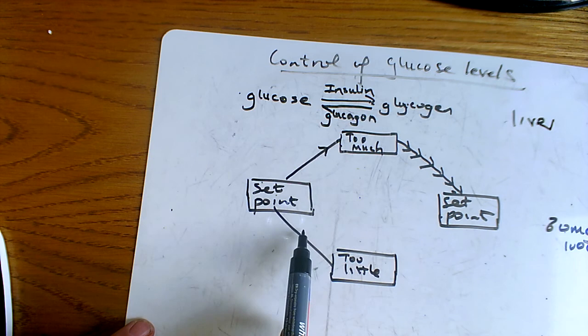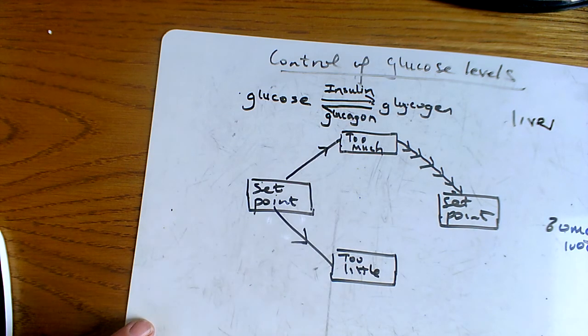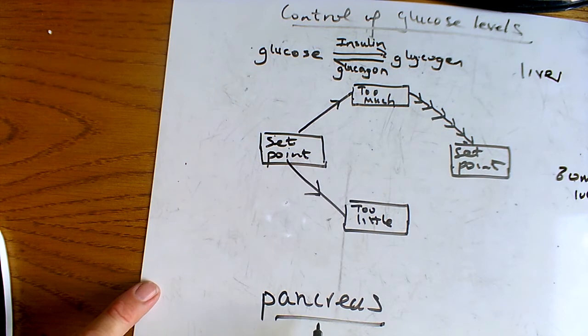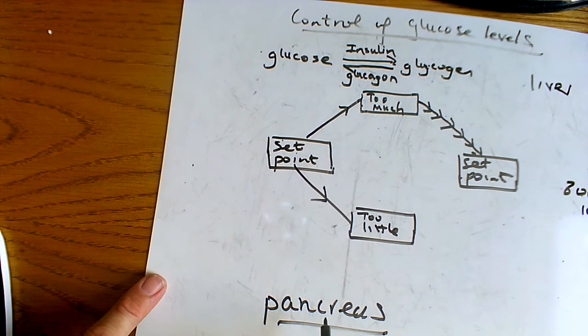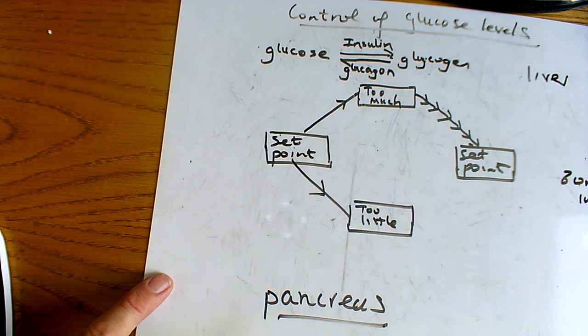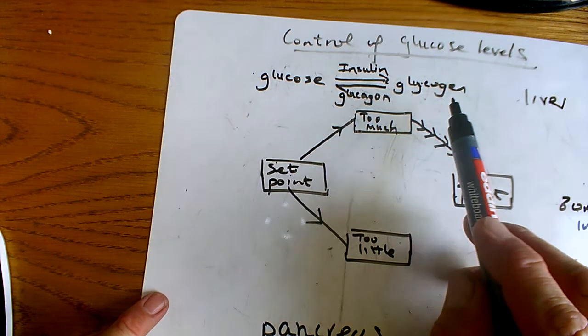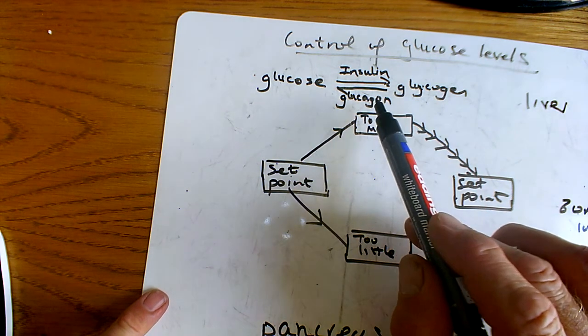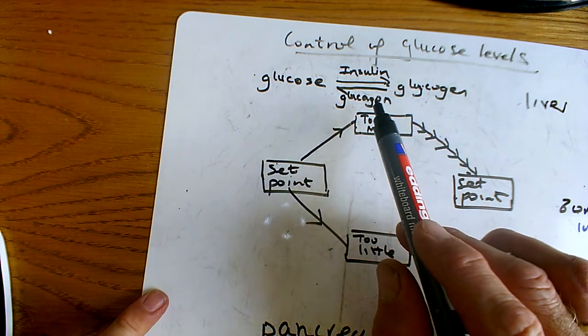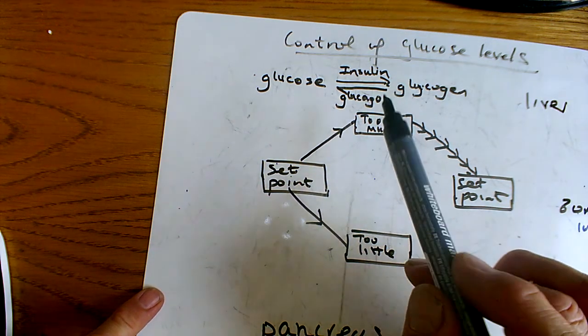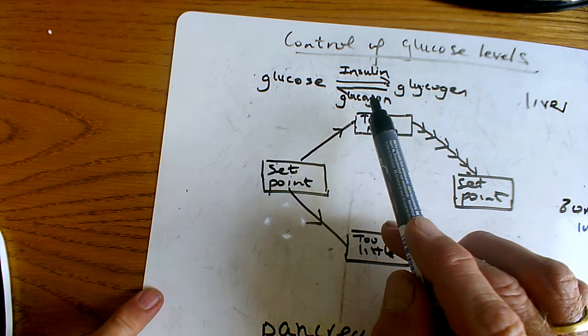So your glucose levels have fallen. As the blood goes through the pancreas, cells of the pancreas detect that there's too little glucose in your blood, and what they do is they release this hormone here, glucagon, into your blood. Glucagon goes around your body to the liver, and when it gets to the liver, the glucagon...